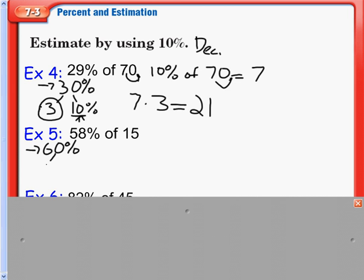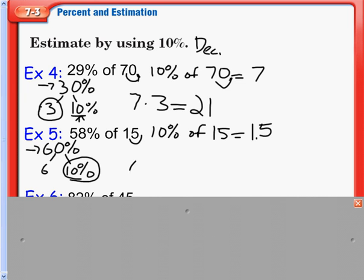60% again is 6 times 10%. And then we find 10% of 15 is easily found by moving our decimal over 1 to the left, and I get 1.5. So 10% of 15 is 1.5. And now, in a sense, we are substituting that back in for this 10% here. So I have 6 times 1.5, and that will give me 9.